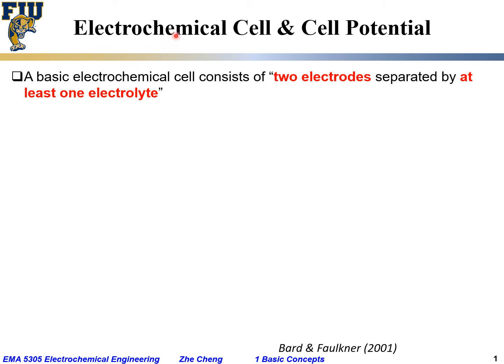We are going to talk about a very important concept that underlies almost all electrochemistry and electrochemical engineering, which is the electrochemical cell and cell potential — the voltage measured between electrodes for an electrochemical cell. So what is an electrochemical cell? An electrochemical cell is a basic device...